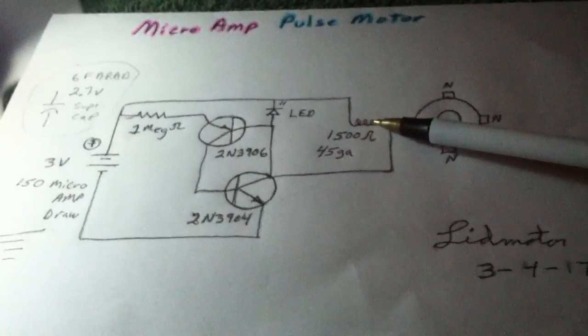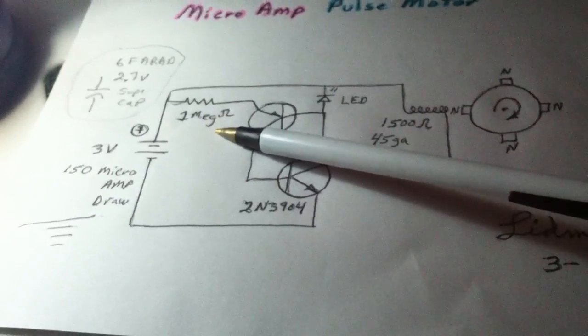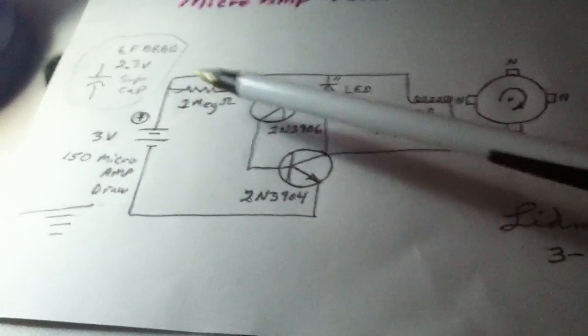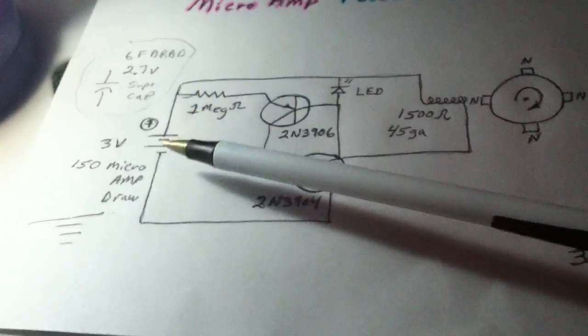This went to 4,000 ohms, and then this is still the same here. You can put a pot in here, a 3-meg pot, and get more control over it.